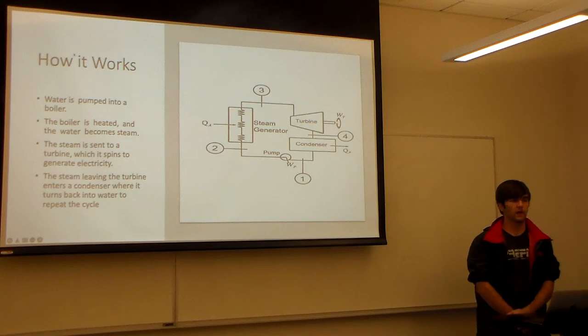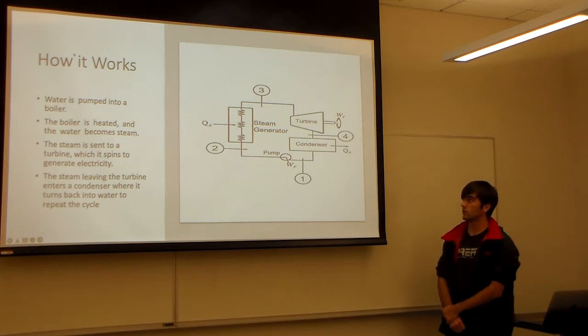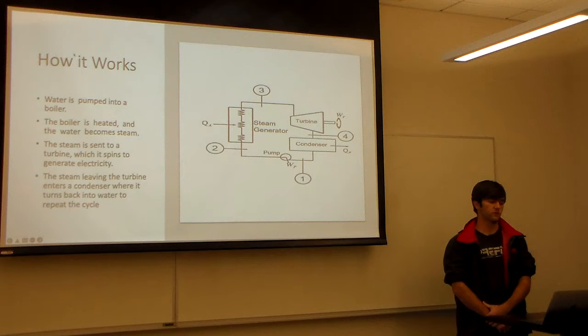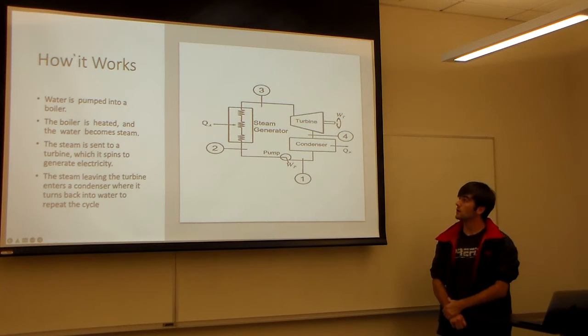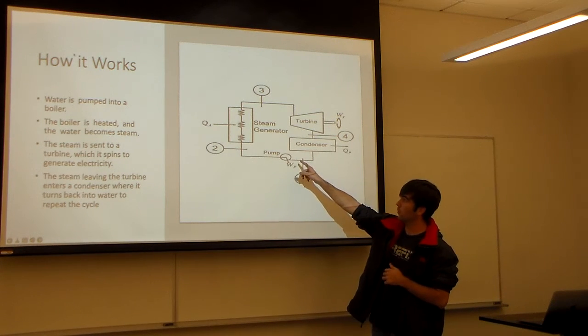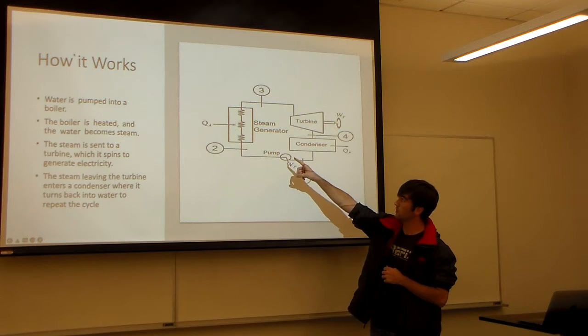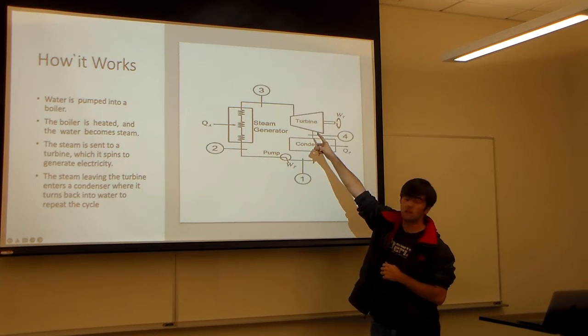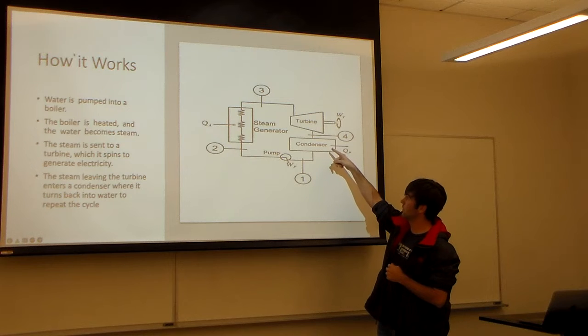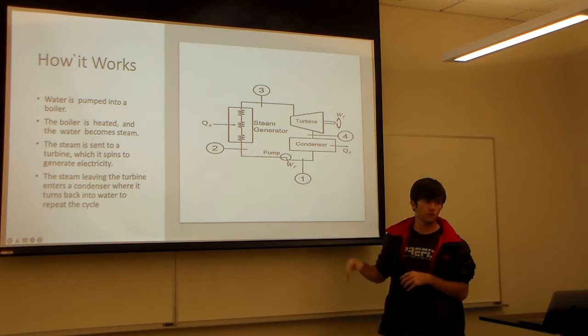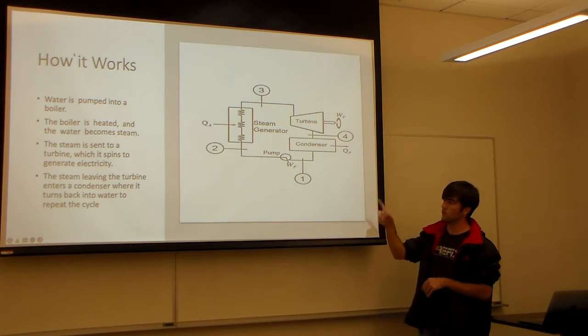This is just a short diagram to show you how this works. Usually a Rankine Cycle is done in a closed system. So water goes in here with the pump, gets pumped to the steam generator. The steam turns the turbine and then goes back to the condenser to turn back into water and then continue the cycle again.